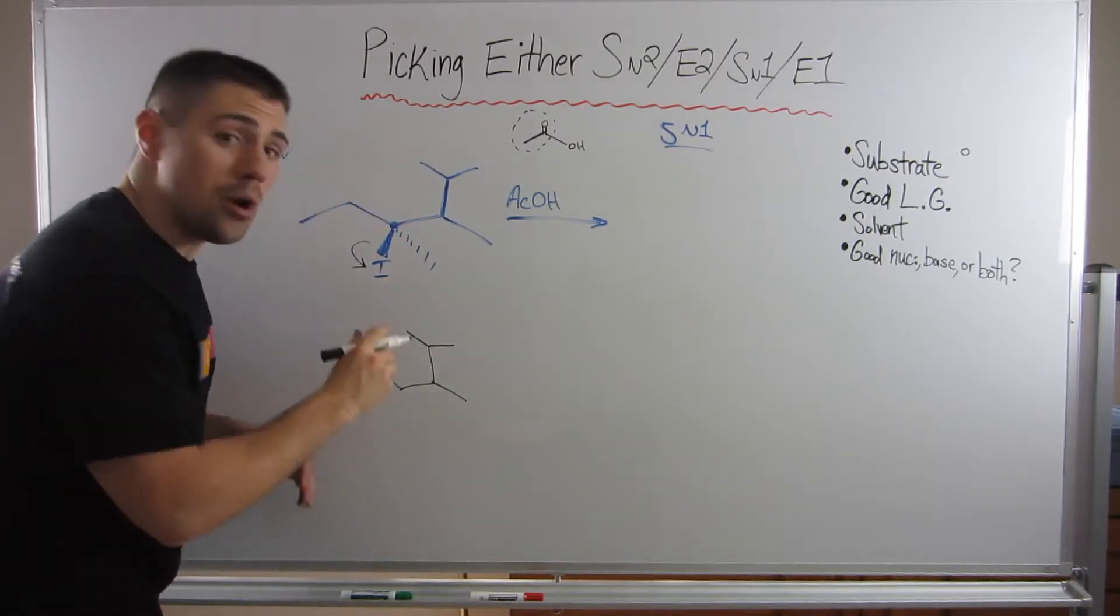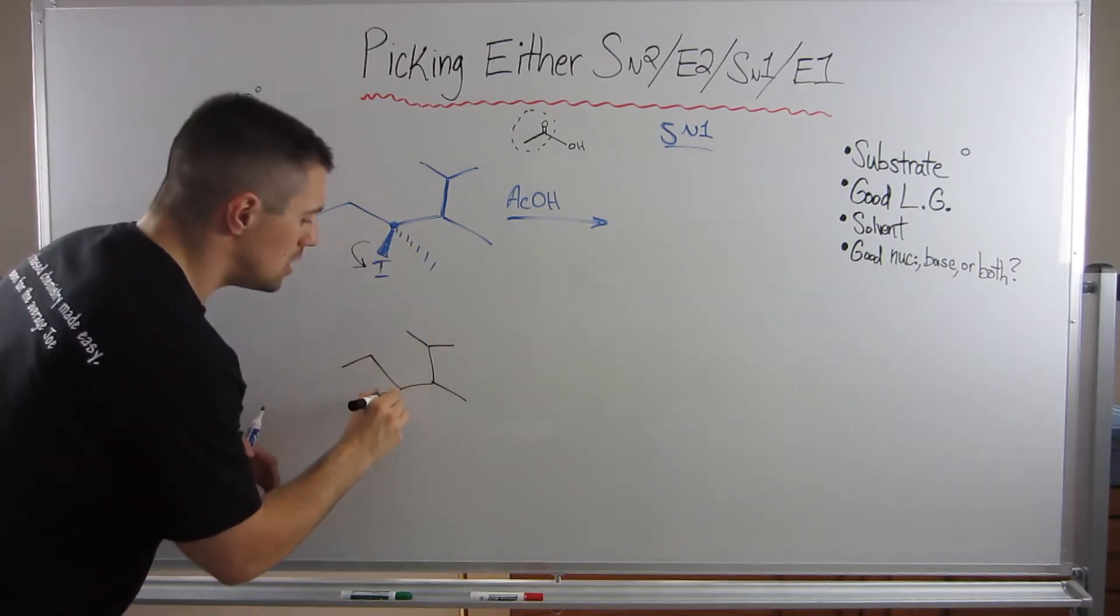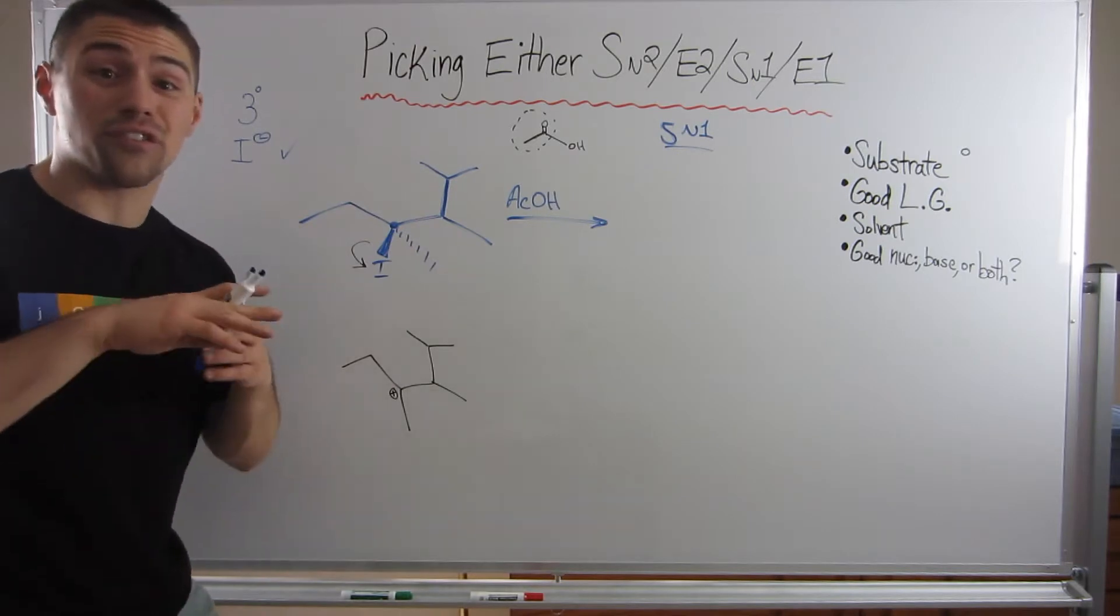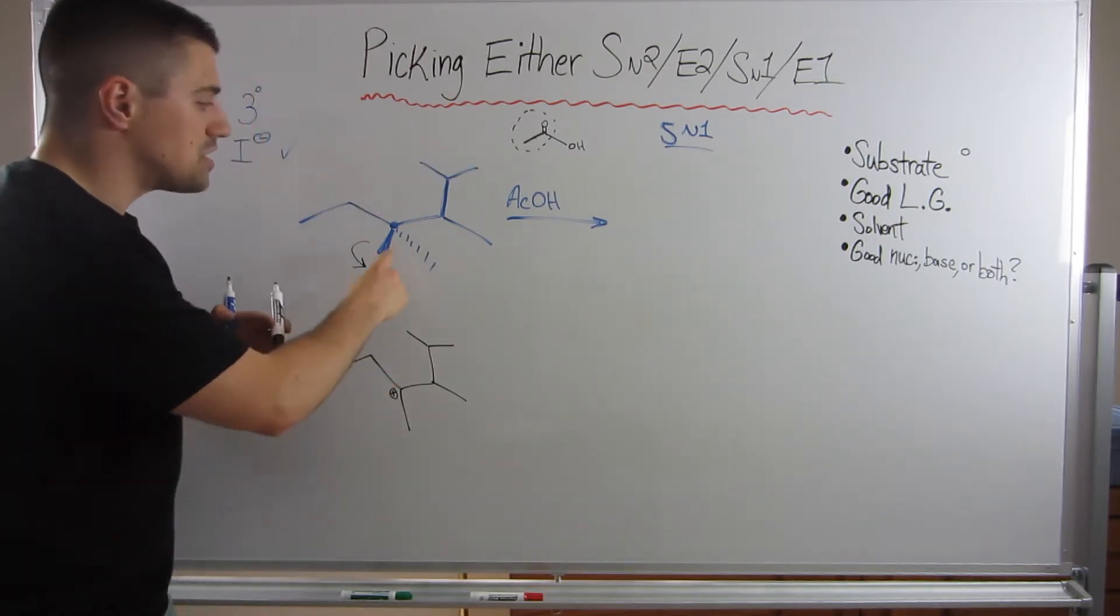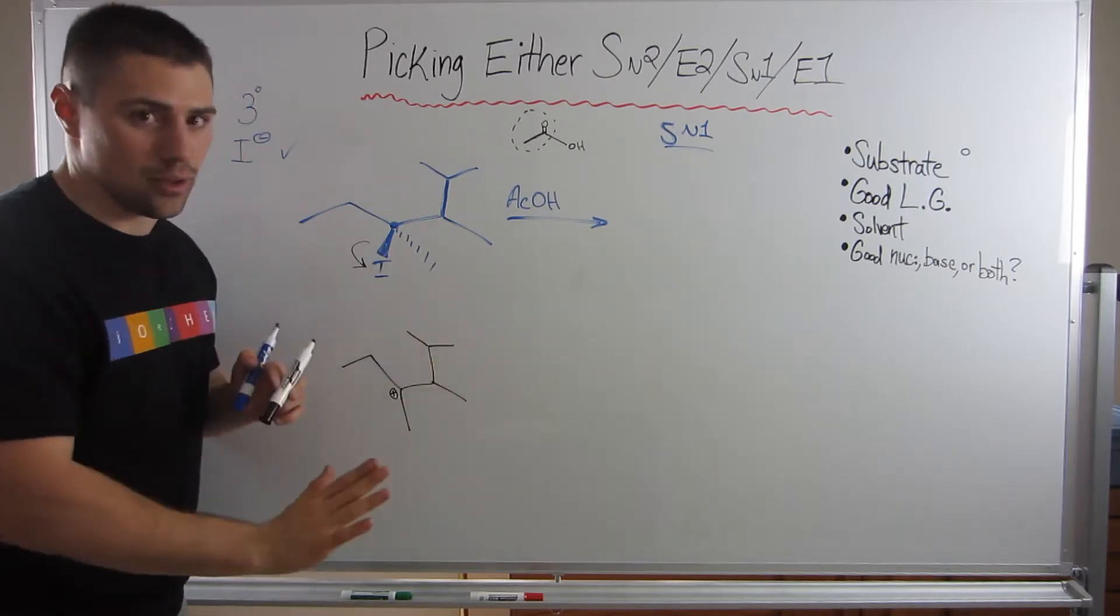We then are trigonal planar, right? Our geometry changes from tetrahedral to trigonal planar. So we are no longer tetrahedral. We are now flat planar, right? So this dash is no longer a dash. It's in the plane with everything else.